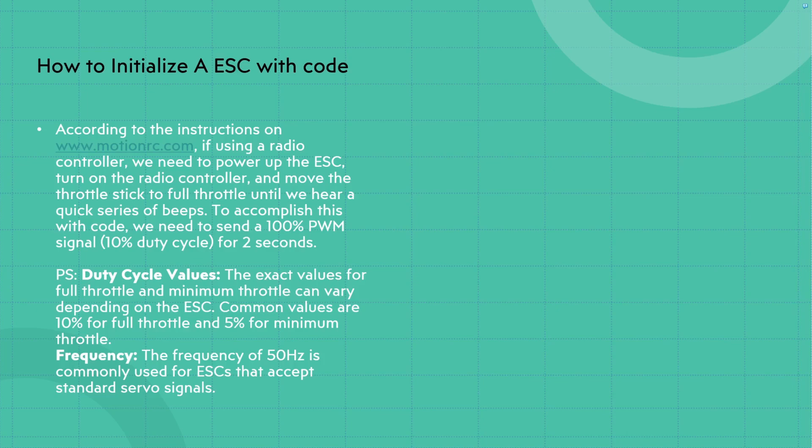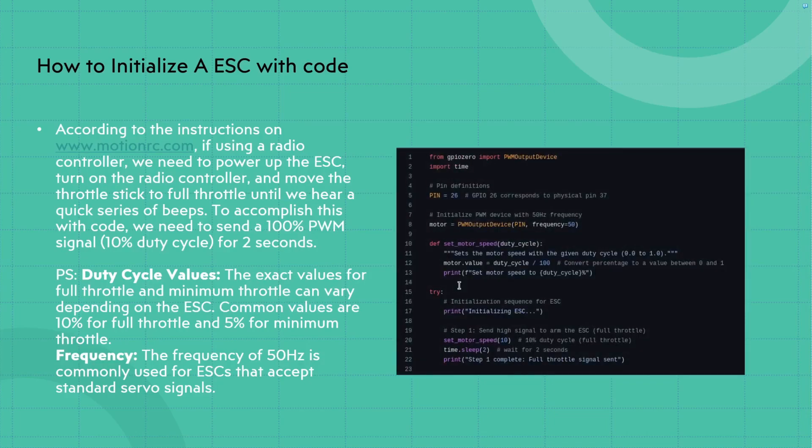And just to clarify, duty cycle values: the exact values for full throttle and maximum throttle can vary depending on your ESC. Common values are 10% for full throttle and 5% for minimum throttle. And the frequency that we're actually going to be using for our PWM signal is 50 Hertz, which is common for a lot of ESCs on the market.